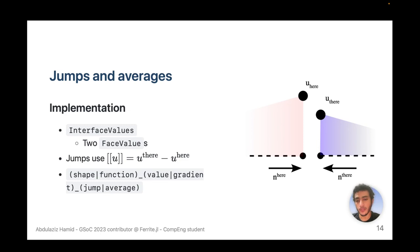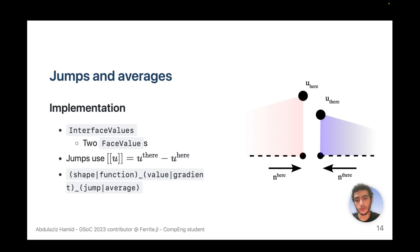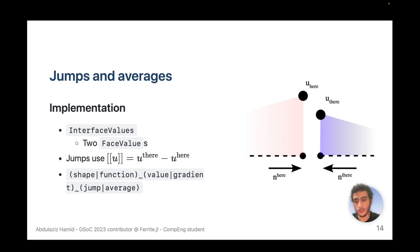We can also evaluate jumps and averages using interface values, which is two face values. The jumps use the convention u_there minus u_here, because the convention of multiplying by the normal vectors can remove information such as the tangential component of the jump when dealing with vector-valued problems. The other convention can be recovered by multiplying by the normal vector to the neighboring cell. We also have shape function value, gradient, jump, and average.